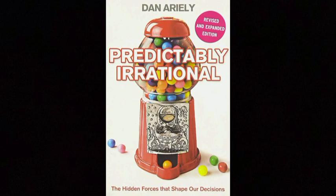2. Avoid the anchor effect. The anchor effect is discussed as a common cognitive bias that can influence our decision-making. It refers to the tendency to rely too heavily on the first piece of information we receive when making a decision, even if it is irrelevant or arbitrary. For example, if we are presented with a high price for a product, we may perceive a similar product with a lower price as a good deal, even if the lower price is still overpriced.